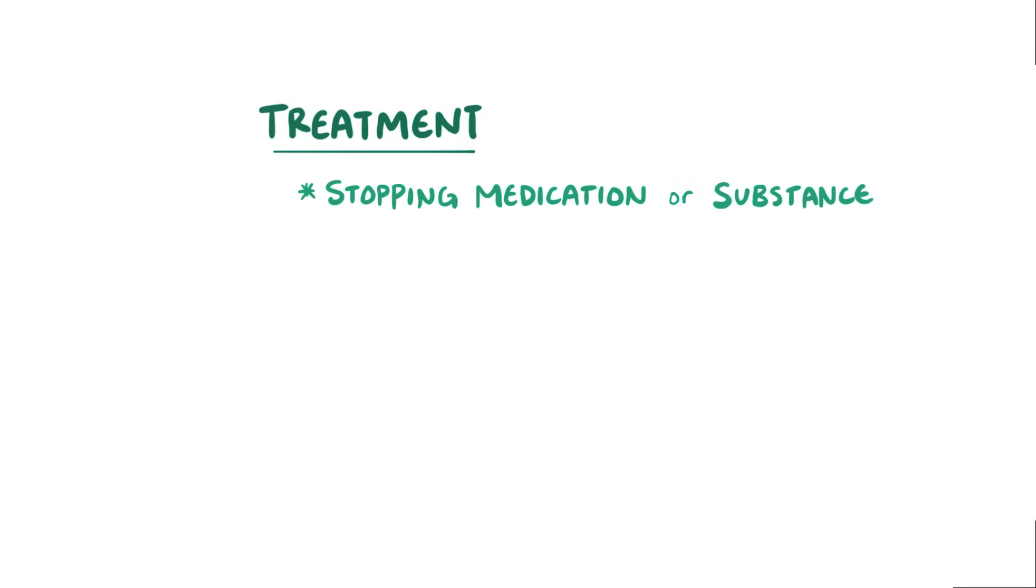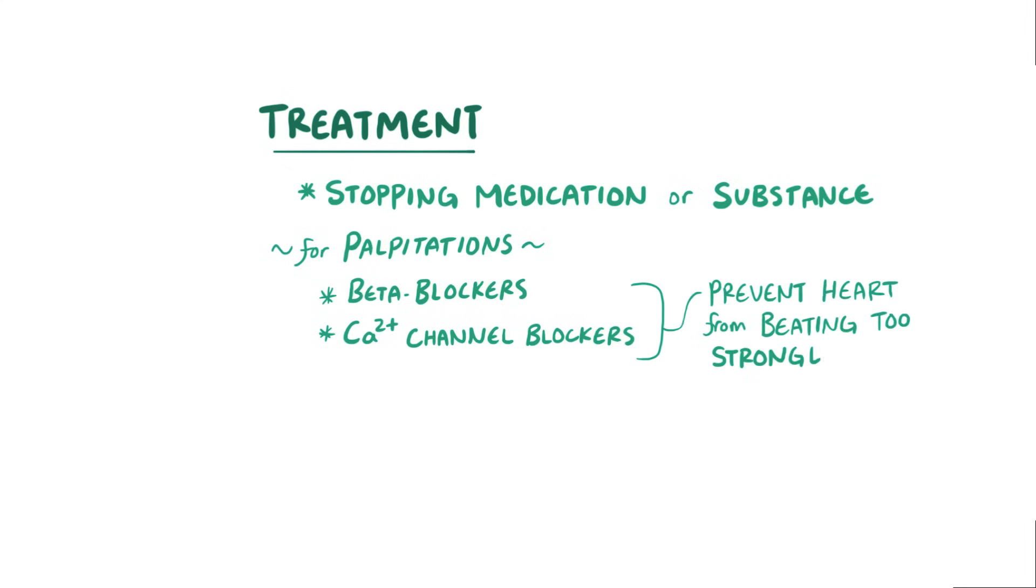If the premature ventricular contractions keep happening or cause palpitations, they can be treated with beta blockers or calcium channel blockers, both of which prevent the heart from beating too strongly.